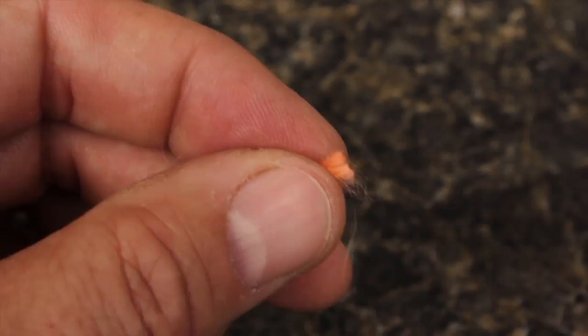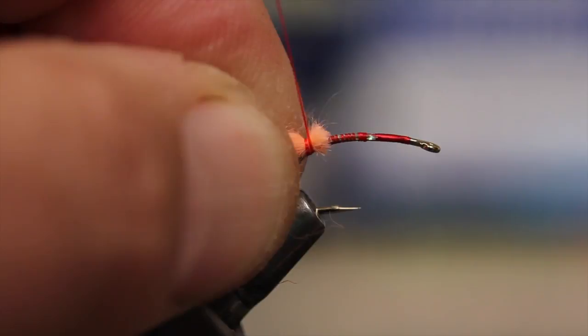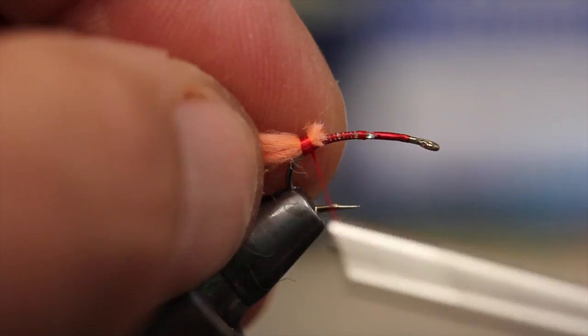Snip one set of ends off square and then secure them to the top of the hook shank at the base of the tail. Angora can be a little slick, so make tight wraps to keep it from rotating.